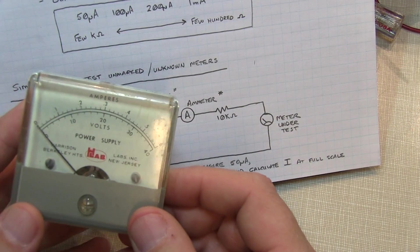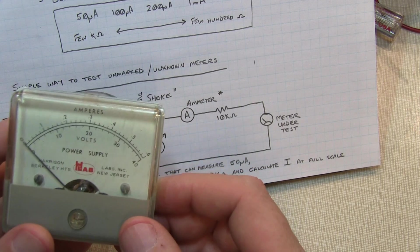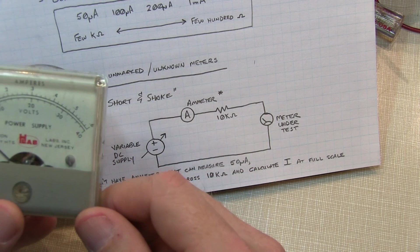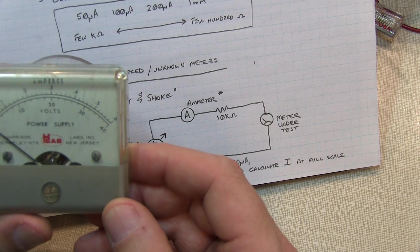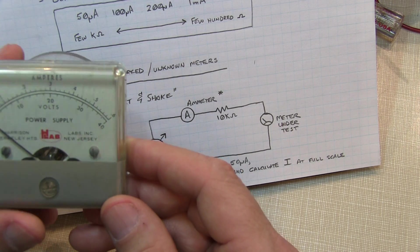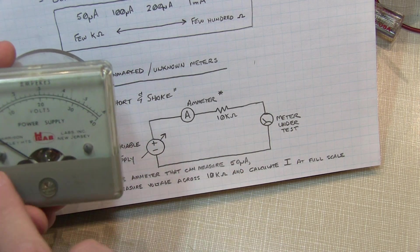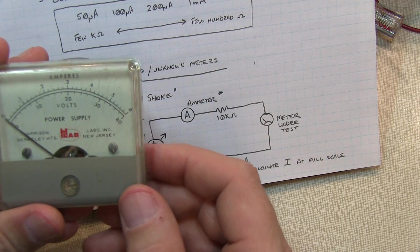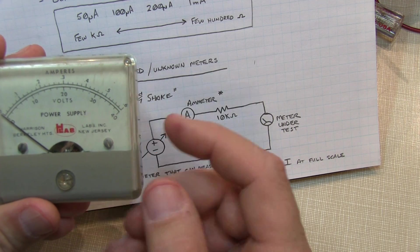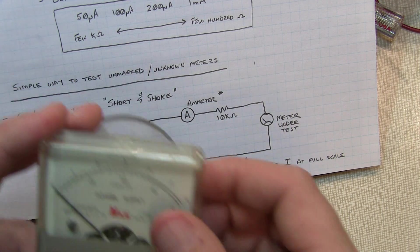Okay, so you've found a meter. It passed the wiggle test. It passed the short and shake test. And so you decide to take it home. After a careful examination, you decide that it doesn't have any markings on it to indicate what the full-scale current reading is. So that's something we can very easily test. And here's how you do that.